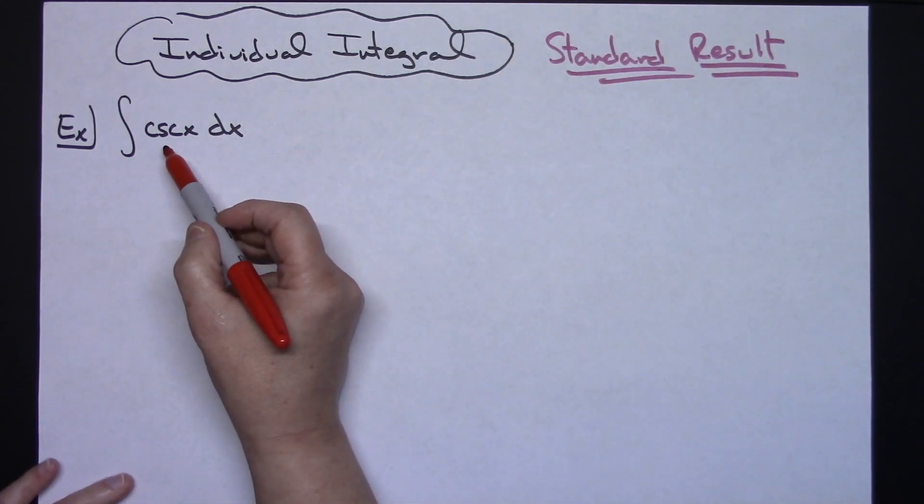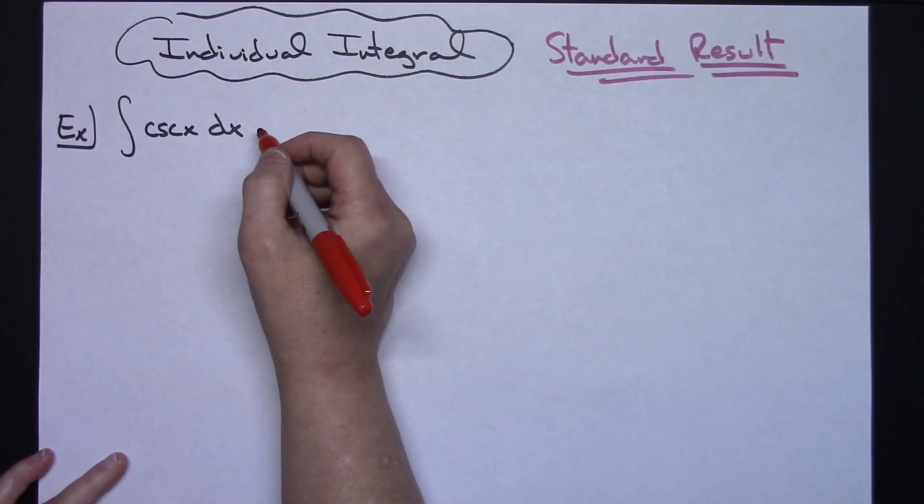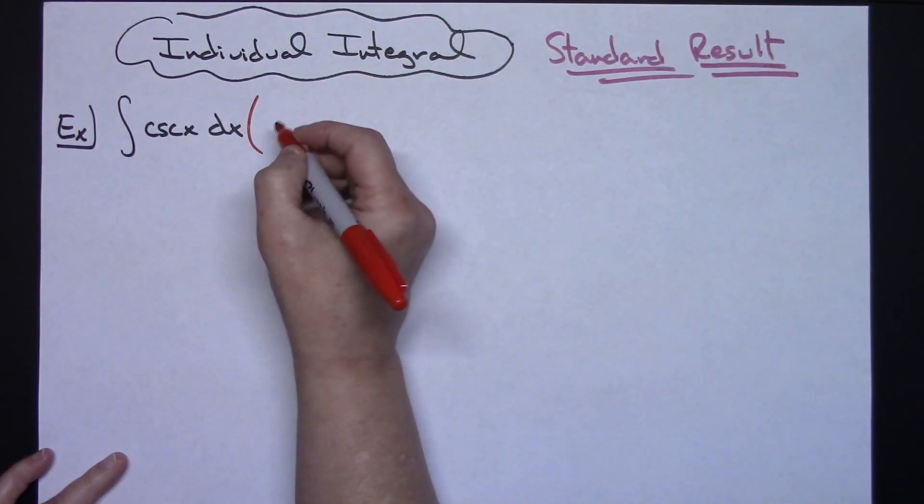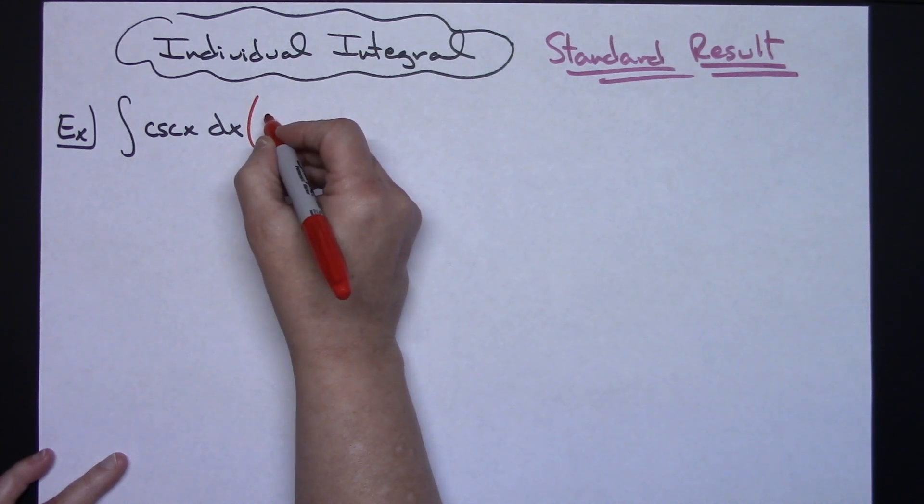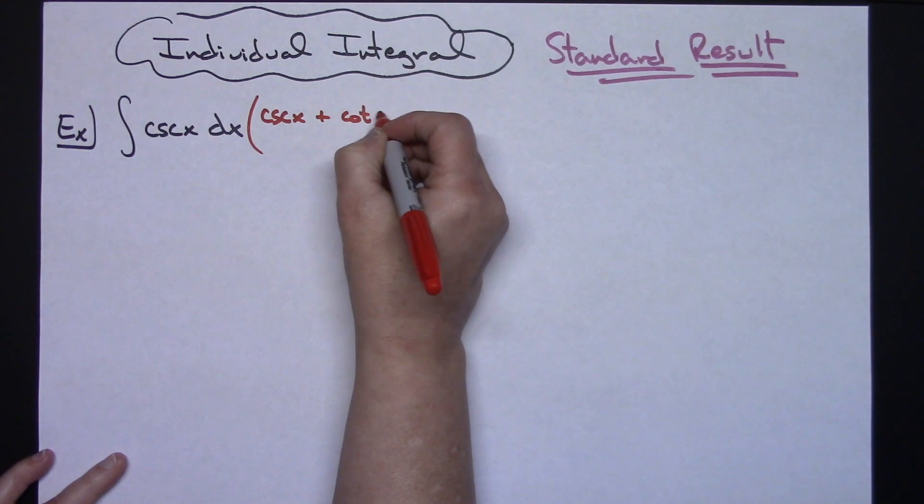So for this one, the trick that makes it an easy u-substitution is to multiply by a form of 1. I'm going to choose cosecant x plus cotangent x over cosecant x plus cotangent x.